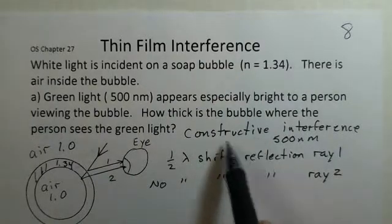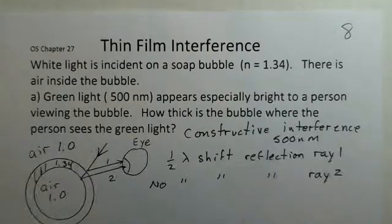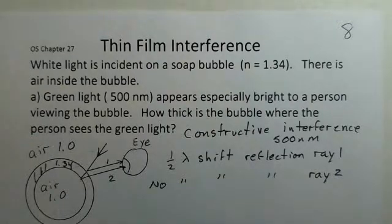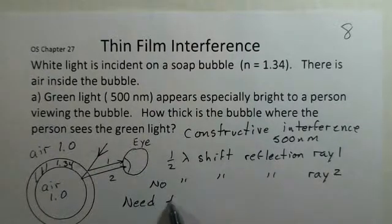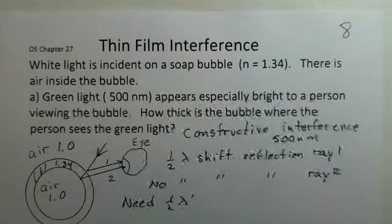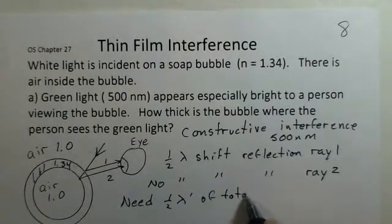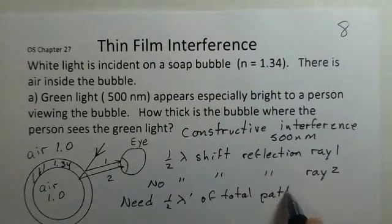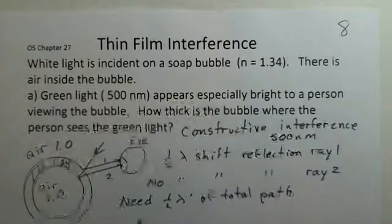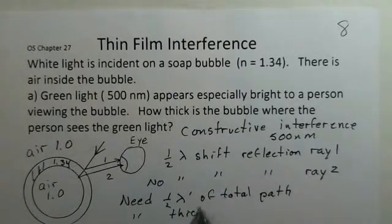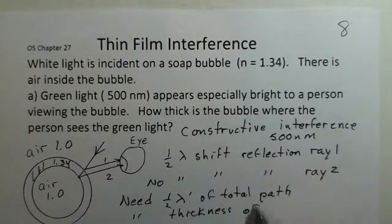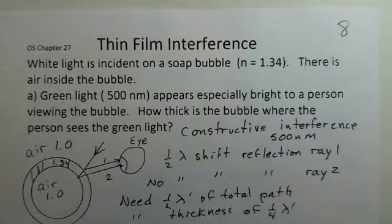We need constructive interference. By virtue of the reflection, we're half wavelength out of phase. How do we restore the beams to be in phase? Well what we need is half of a wavelength, and again it'll be a different wavelength than the soapy water material. We need half a wavelength of total path inside the material. That means we need a thickness of one quarter of this wavelength in the material.